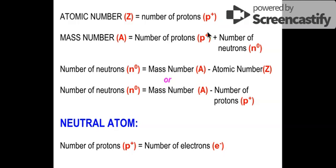Second is the mass number. The mass number A — A is the symbol of the mass number — is always equal to the sum of your protons and neutrons, because the mass of the atom is due to your protons and your neutrons. That's why you just have to add the number of protons and the number of neutrons.